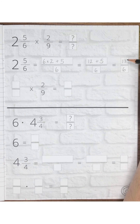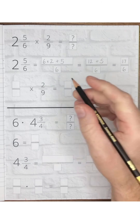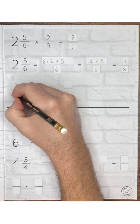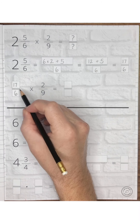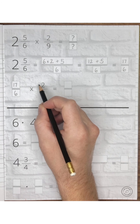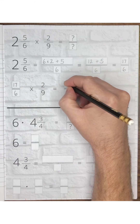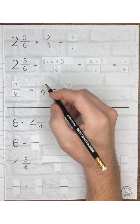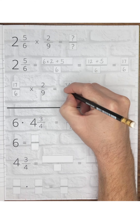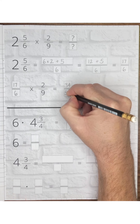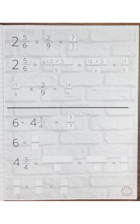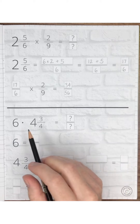We have seventeen-sixths. When converting to an improper fraction, we get seventeen-sixths. 17 times 2 is 34, and 6 times 9 is 54, so we have thirty-four fifty-fourths.